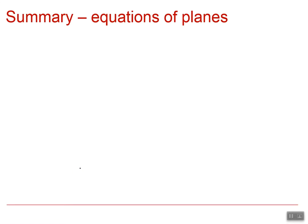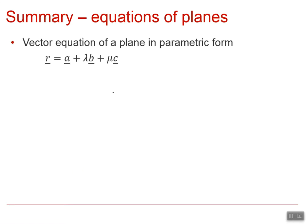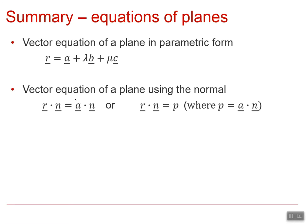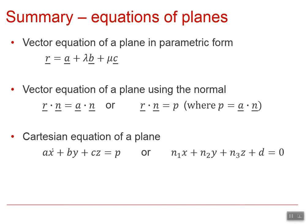Now we're going to have a summary of the equations of planes that we've looked at so far. We can write the vector equation of a plane in parametric form with a being a position vector and b and c being direction vectors. Lambda and mu are scalars. We can also write the vector equation of a plane using the normal, so we do r dot n equals a dot n, or a rearrangement r dot n equals p where p is the dot product of a dot n.